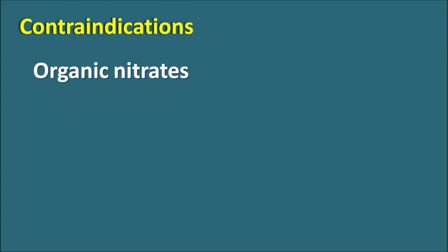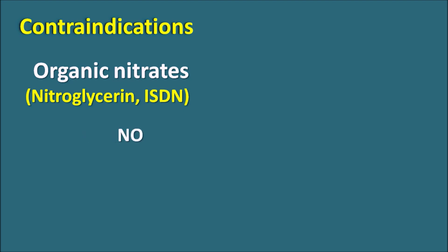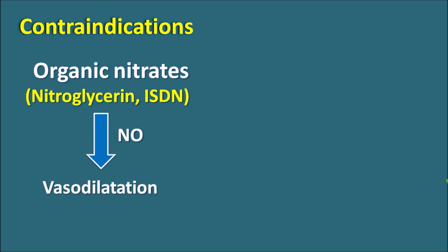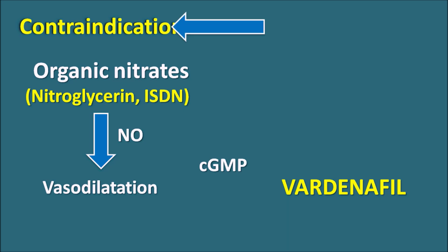What are the contraindications? The main contraindication is the use of organic nitrates. Organic nitrates such as nitroglycerin, isosorbide dinitrate, and isosorbide mononitrate are anti-anginal agents and vasodilators — they release nitric oxide producing vasodilatation. Vardenafil also produces vasodilatation by increasing cyclic GMP. When this combination is used, they can produce severe hypotension which may cause coma and death. Therefore, organic nitrates are strictly contraindicated with Vardenafil.